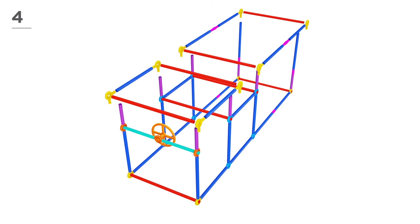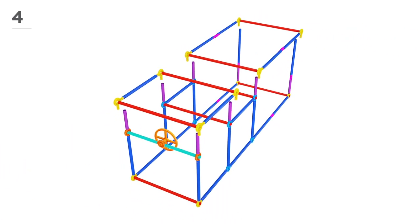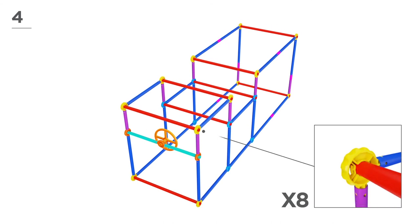Now, use 6 red poles, 6 blue poles, and 8 yellow connectors. Snap-and-click all parts together to build the top.